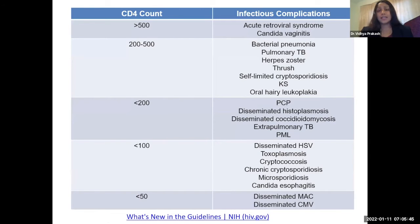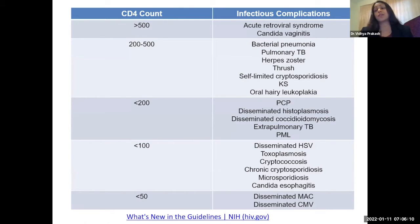I like to use this chart as a quick reference of what HIV patients are most vulnerable to based on their CD4 counts. At higher CD4 counts, typically greater than 500, you're going to see acute retroviral syndrome. In any sexually active patient presenting with fever, rash, and either an exudative or non-exudative pharyngitis, you have to keep acute retroviral syndrome due to HIV in mind and consider diagnosis through an HIV viral load. We also see candida vaginitis in patients with higher CD4 counts.